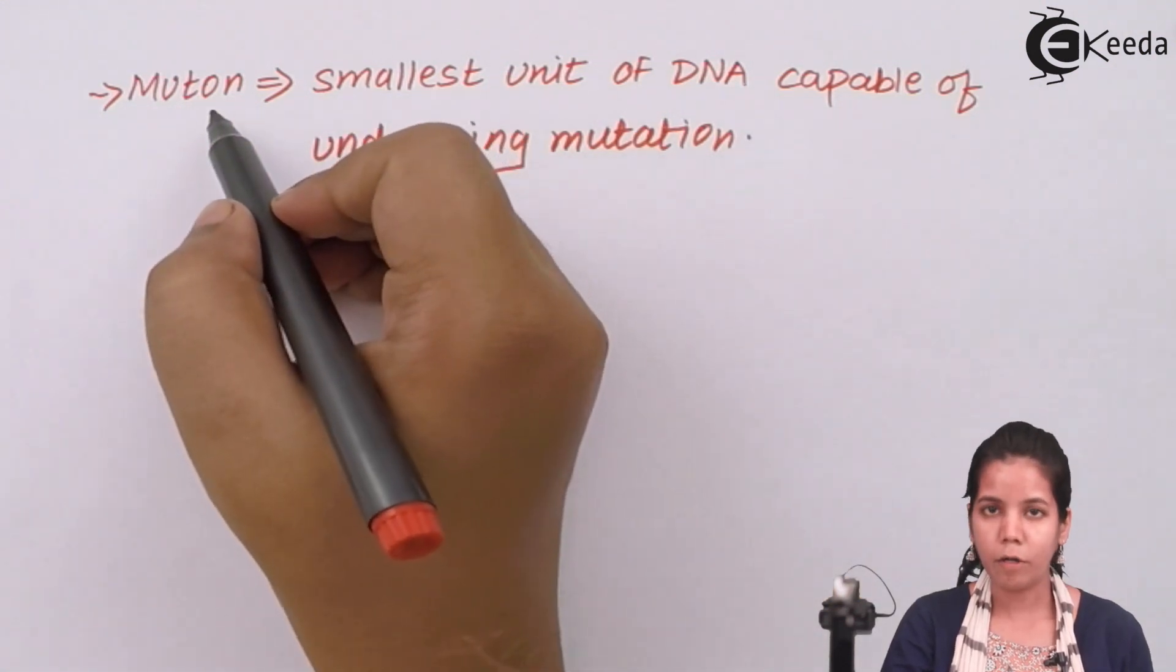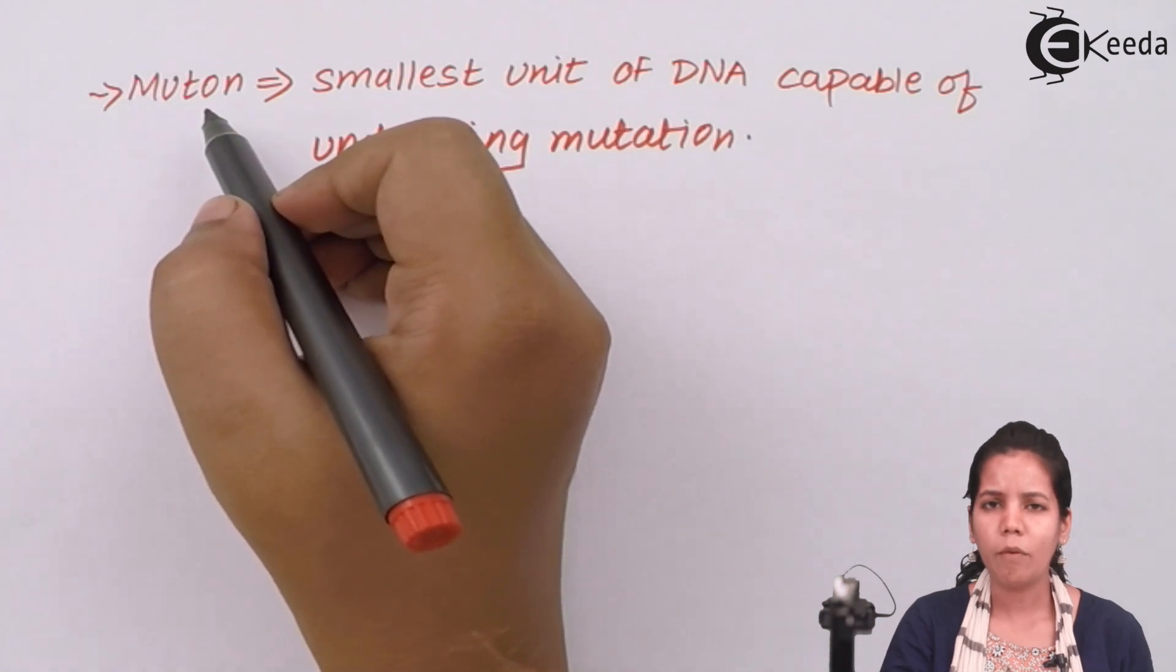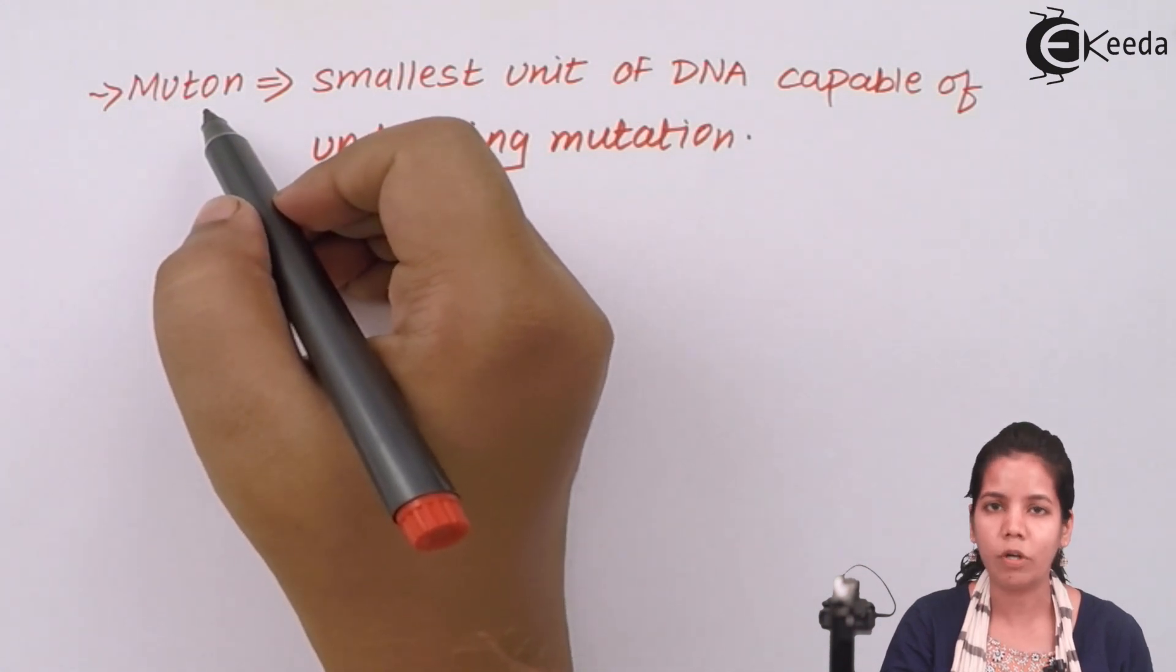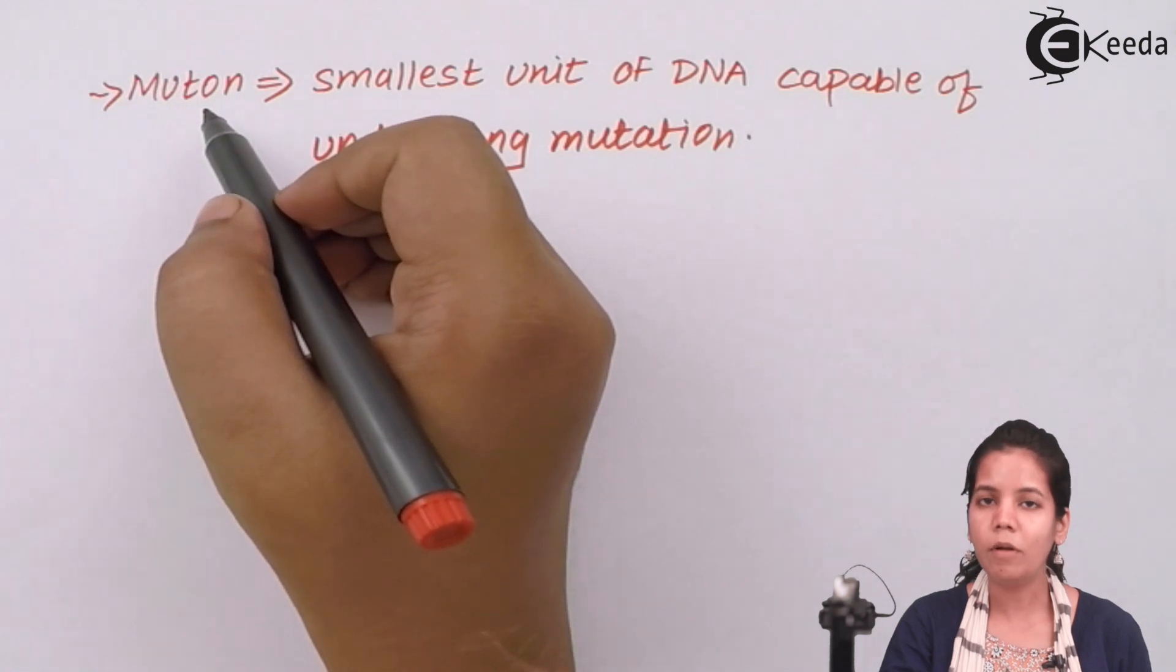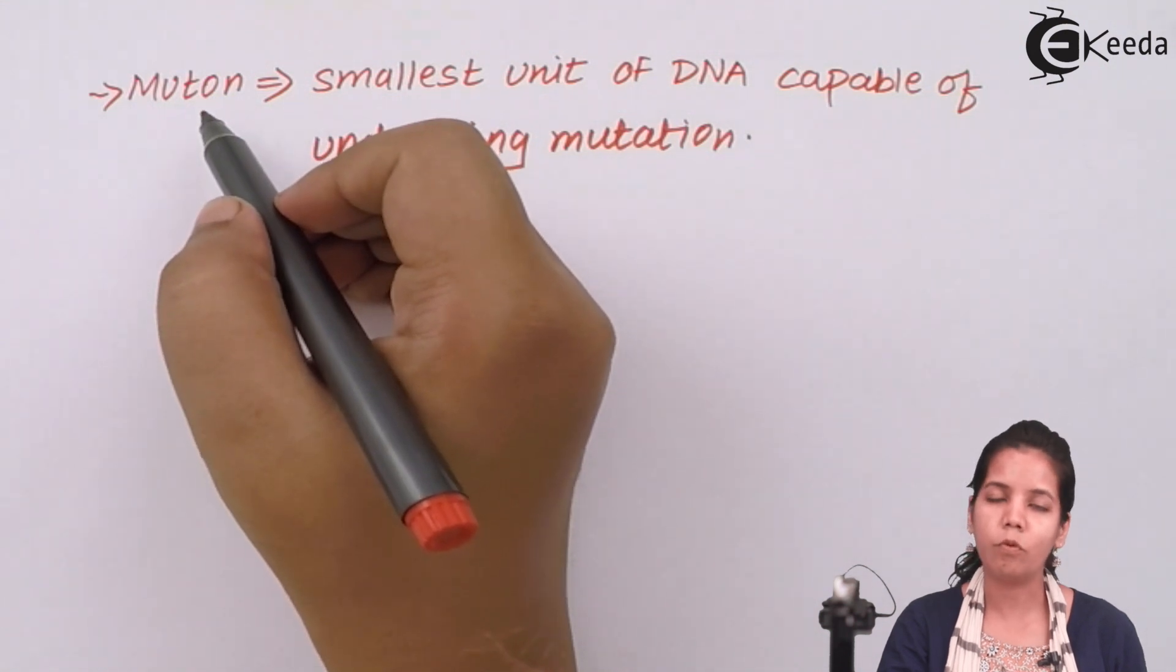But when I talk about mutons, now these genes can undergo mutation. When I say mutation it is nothing but change in nucleotide sequence. If the normal nucleotide sequence that is ATGC or whatever is the base pairing not follow then there are chances that genes would become mutated.